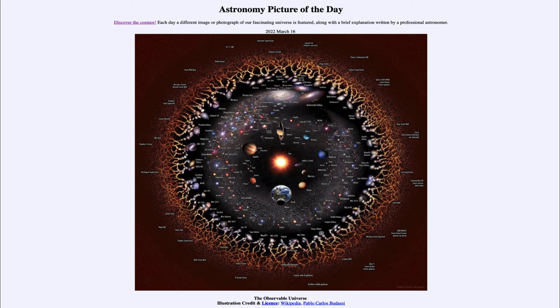And that was material released when matter and light separated. Before that time they were linked together. Once they separated, the universe became transparent, and that's when the cosmic background radiation was released. We see that now as a dull microwave light coming from every direction in the universe.